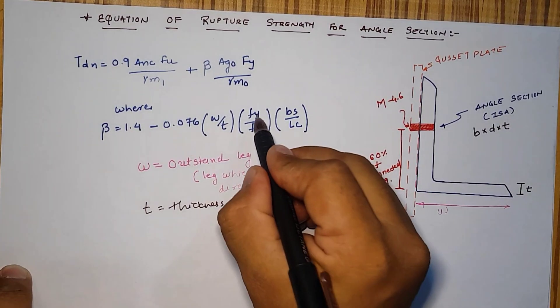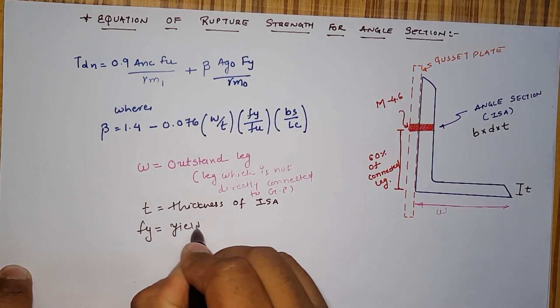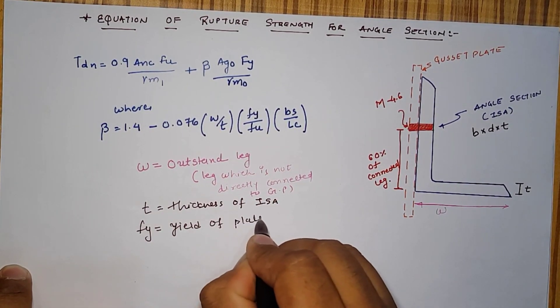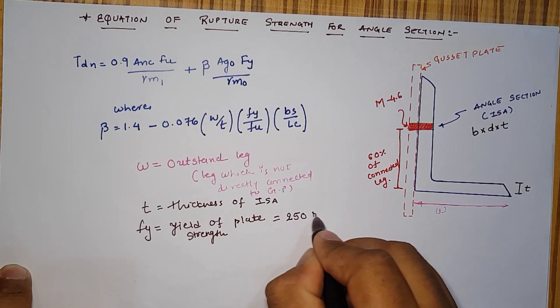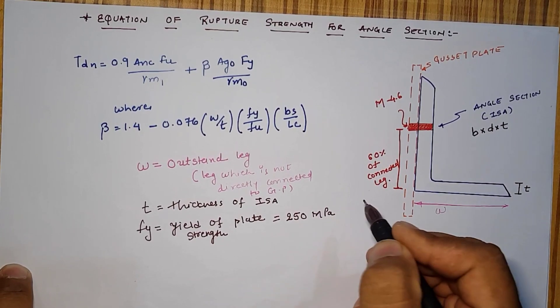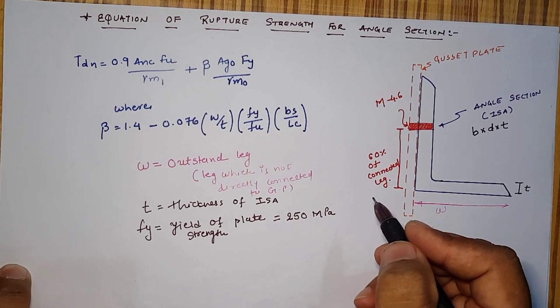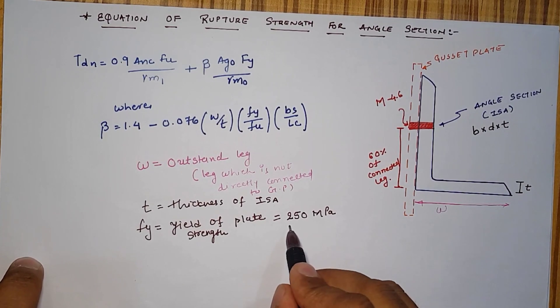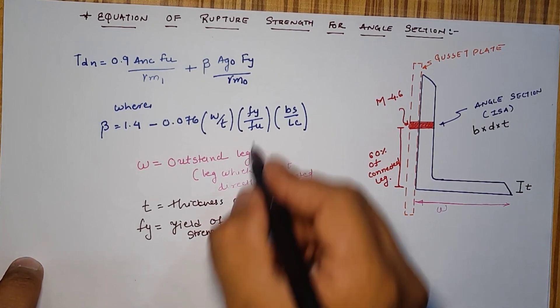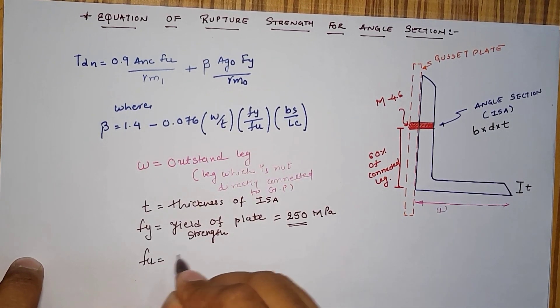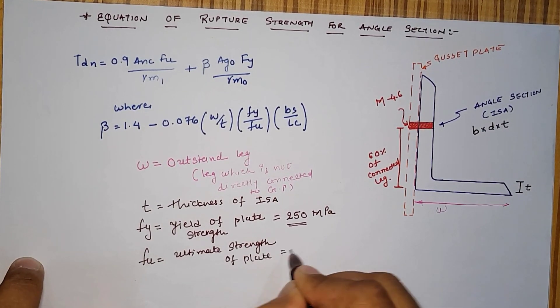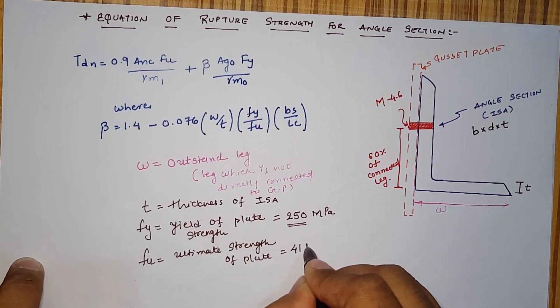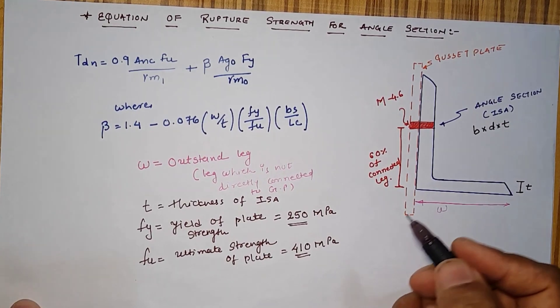Next part is Fy which is equal to 250 MPa. We are generally assuming between 240 to 250 MPa and for example we are going to take 250 MPa. Fu is 410 MPa.